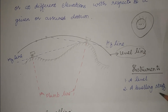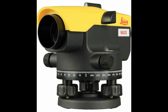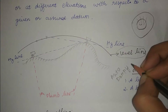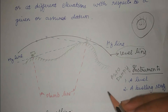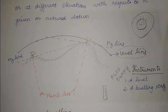The instruments used for leveling are a level and a leveling staff. A level is an instrument consisting of a telescope, a level tube, a leveling head, and a tripod. There are many types of levels; the most commonly used are the auto level and the dumpy level. A leveling staff is a rectangular rod which is graduated. Leveling staffs are usually three meters high, though they come in different heights.